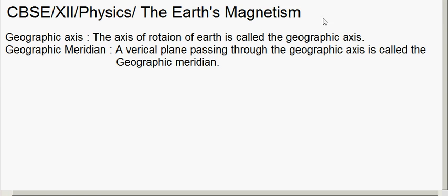Next we have the magnetic axis. The axis of the huge bar magnet which is assumed to be embedded inside the Earth is called the magnetic axis. Since the Earth behaves as a huge magnet, we consider a huge bar magnet embedded inside it, and the axis of that magnet is called the magnetic axis.